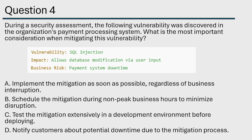Question number four. During a security assessment, the following vulnerability was discovered in the organization's payment processing system. What is the most important consideration when mitigating this vulnerability? Looks like we have an SQL injection that allows database modification via user input — never a good thing. Business risk: payment system downtime is what we're identifying.